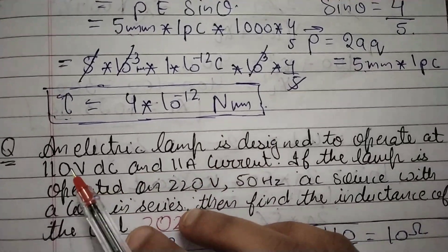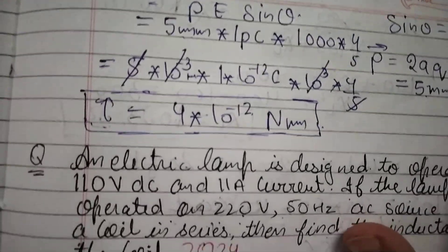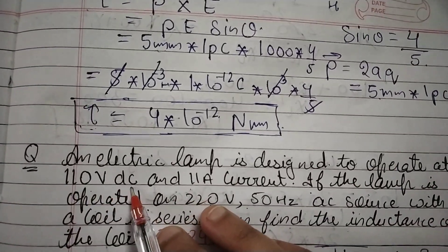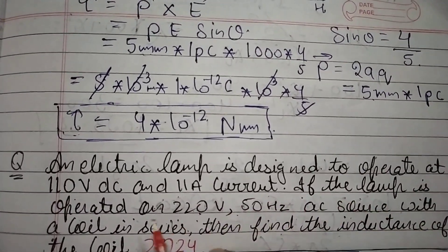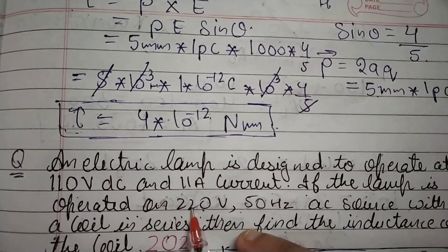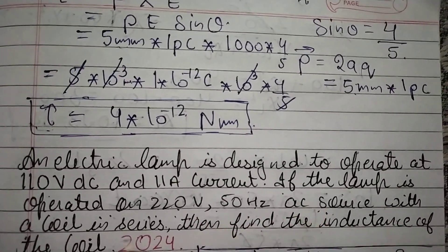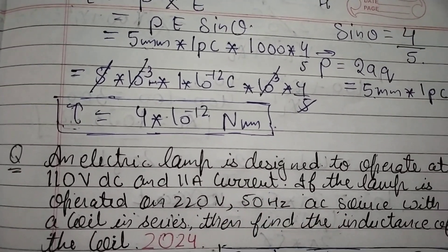Good morning students. An electric lamp is designed to operate at 110 volt DC and 11 ampere current. If the lamp is operated on 220 volt and 50 hertz AC source with a coil in series, then find the inductance of the coil. This is the question we have been asked.